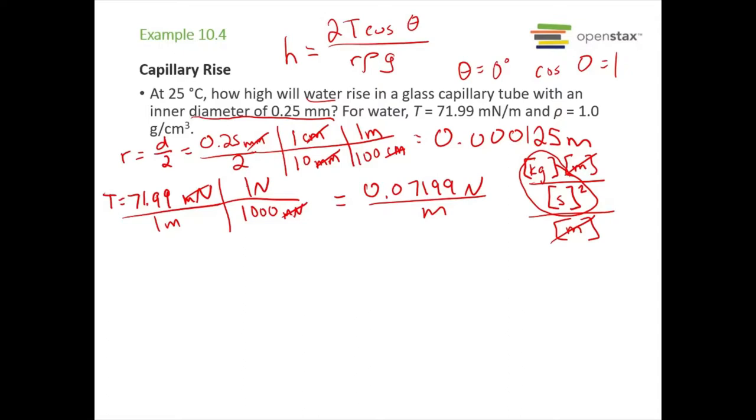And then the density of water, we're told 1.0 grams per cubic centimeter, and we need this in kilograms per cubic meter. We know there's one kilogram per 1,000 grams, and then we have 100 centimeters per meter, and we need to cube that. So this comes out to be 1,000 kilograms per cubic meter. And then we know g is 9.81 meters per second squared.